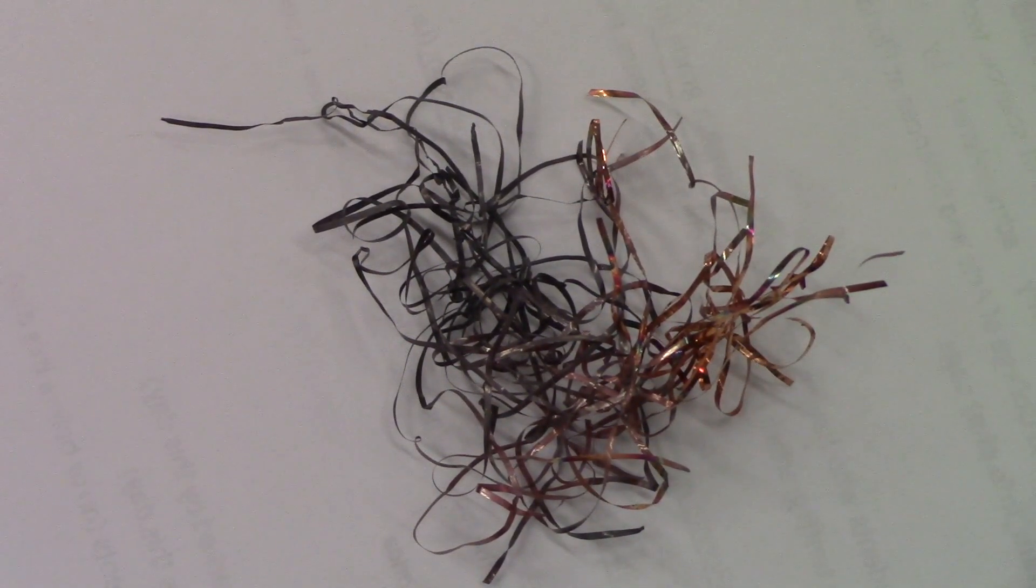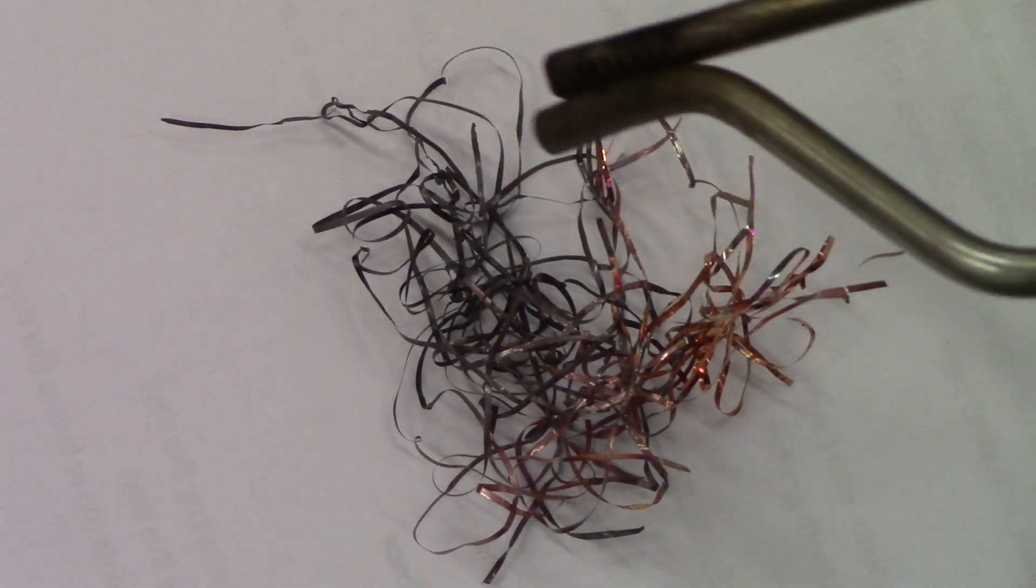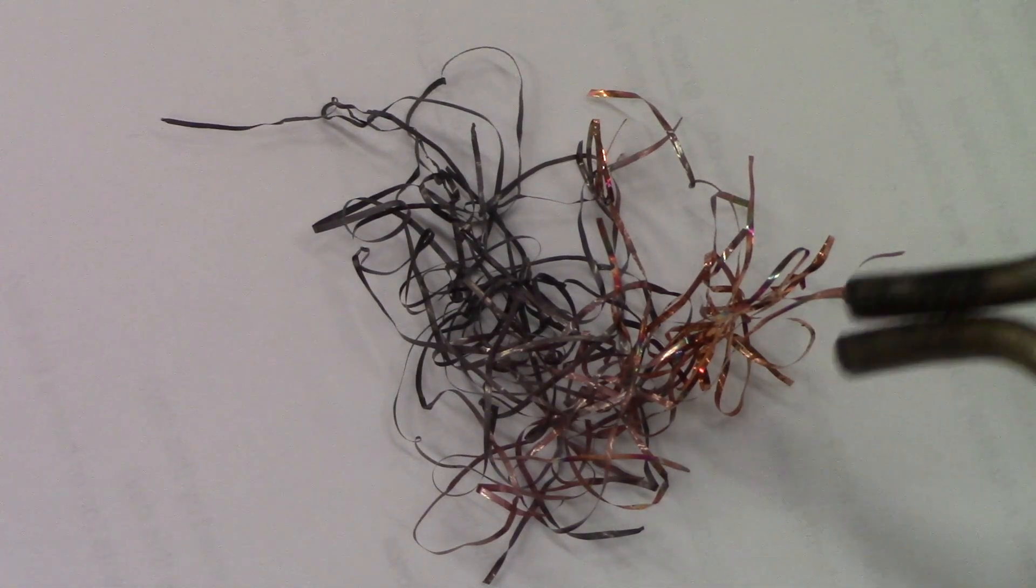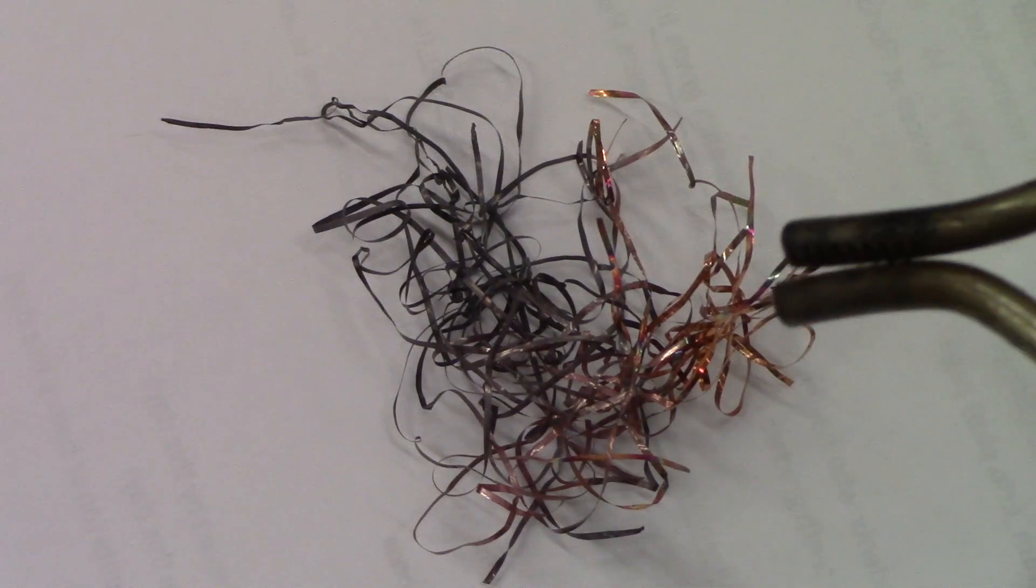Here is our copper after it has been through the flame. You can see over on this side, it's dark grayish, almost getting near black. That's where the copper oxide is formed on the outside of the layer. Over on this side, we still have the bright, shiny, traditional copper color.